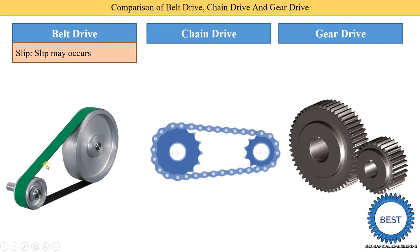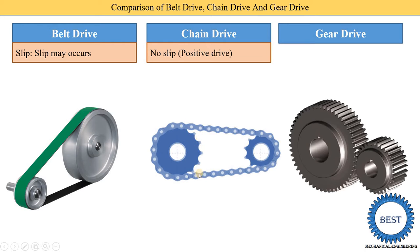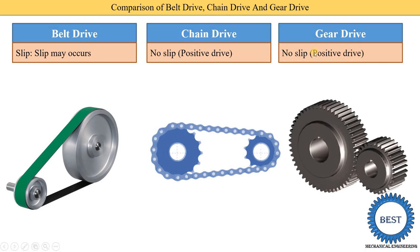Due to slip, the velocity ratio does not remain constant — the velocity ratio changes. In a chain drive, no slip occurs. We use sprockets, and the sprockets have teeth, so there is no chance of slip. Due to no slip, the velocity ratio is also constant. Chain drive is called a positive drive, and the belt drive is called a negative drive. In gear drive, there is also no chance of slip, so gear drive is also called a positive drive.